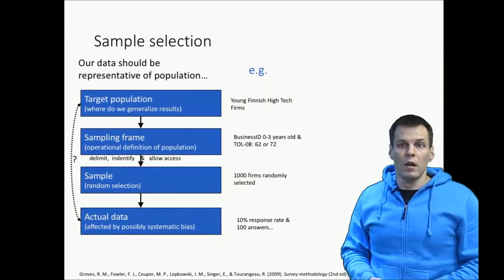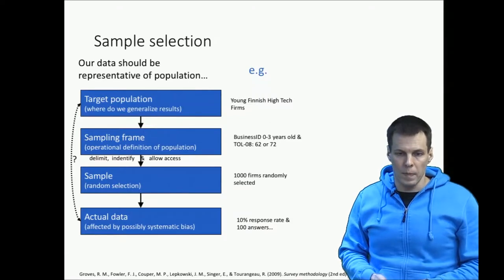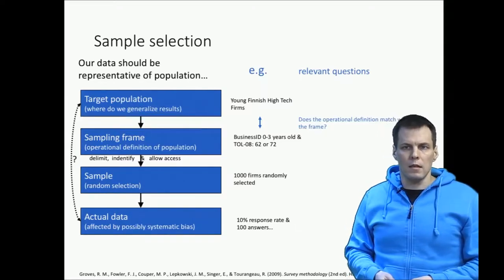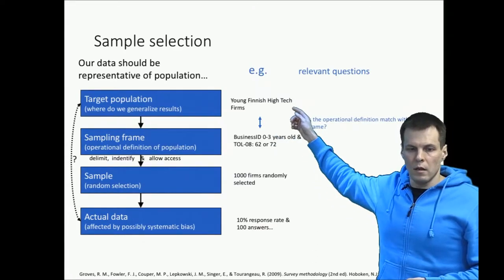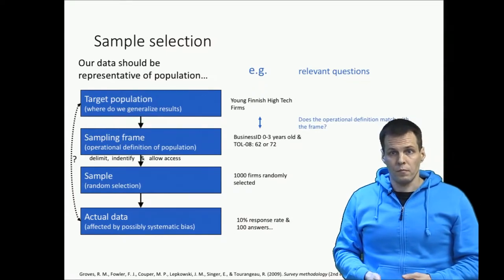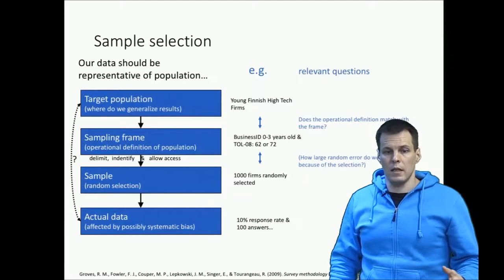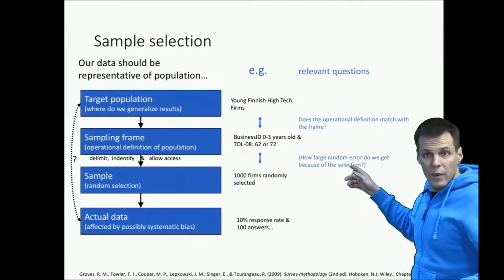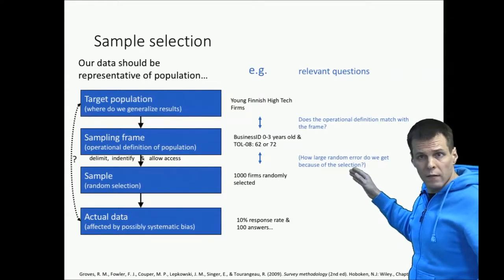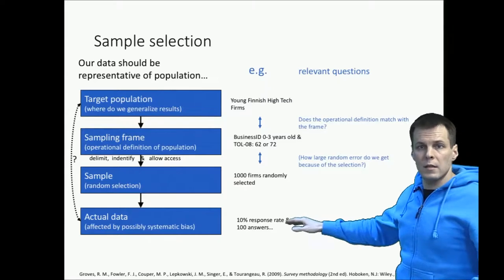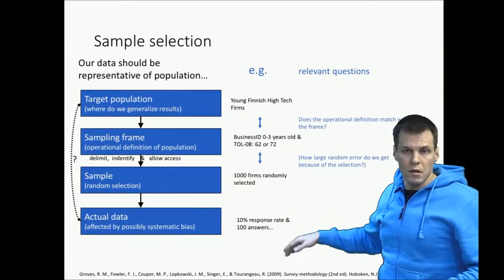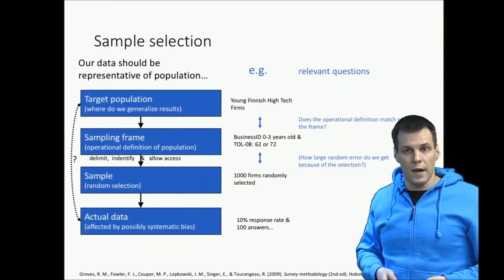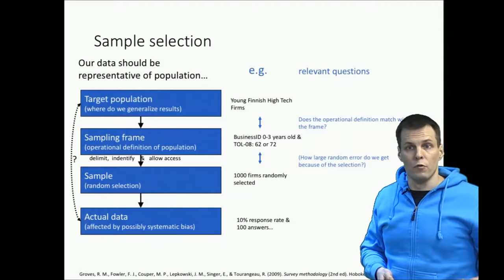For example, 10% of informants invited to participate decide to respond to the survey. So what can go wrong? The relevant question with the sampling frame is: does our operational definition of the population match the conceptual one? Does the frame match the population? Then, how large is the sample size? If randomly chosen, the only thing we can decide is how many observations we get. When planning for sample size we have to take the expected response rate into consideration. If we expect a 10% response rate and need 500 full responses, then we should send invitations to 5,000 companies.